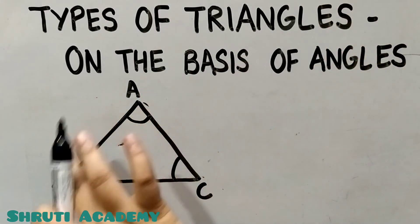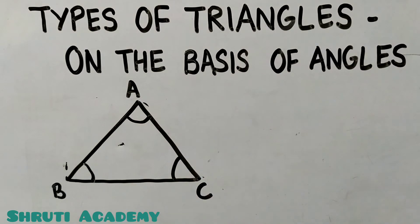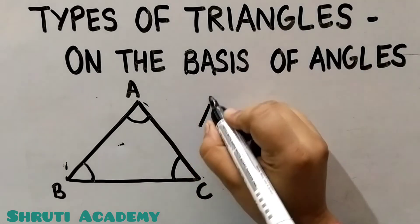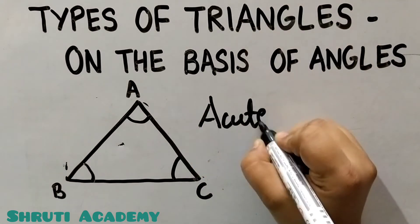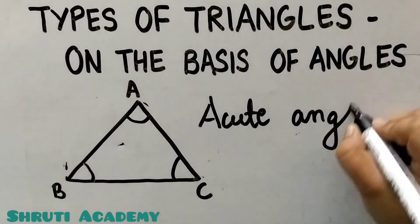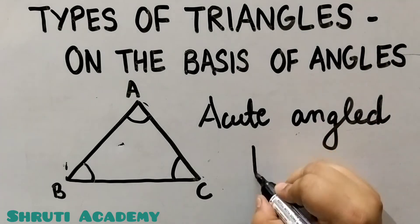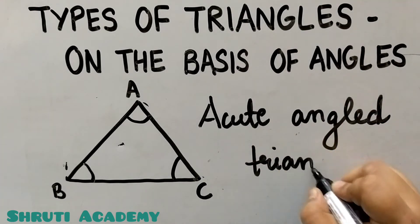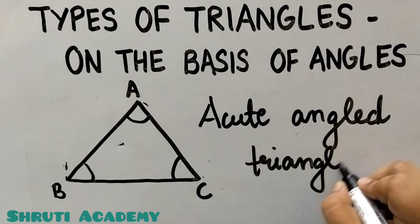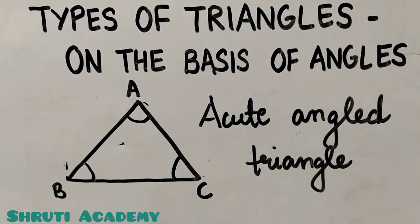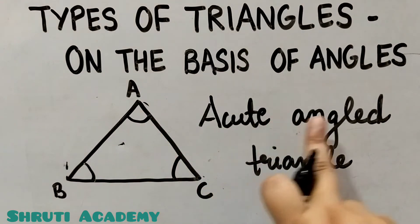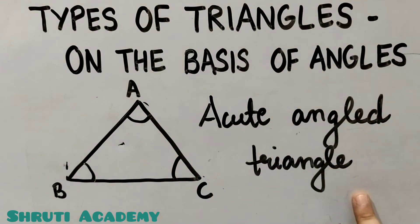This triangle has all angles that are acute. So this triangle is what we call an Acute Angle Triangle. A triangle in which all three angles are acute — that is, less than 90 degrees — is known as an Acute Angle Triangle.